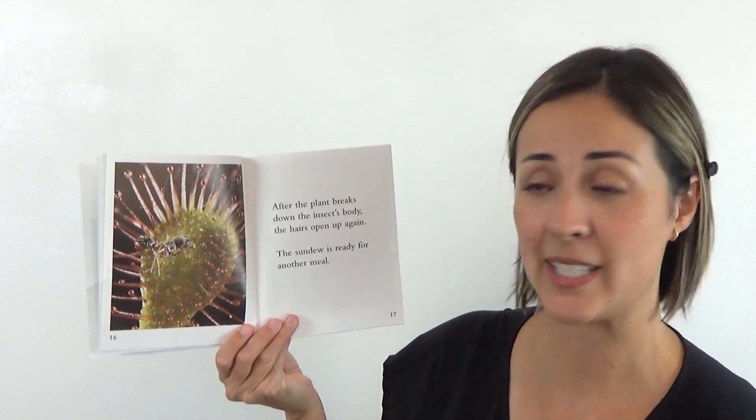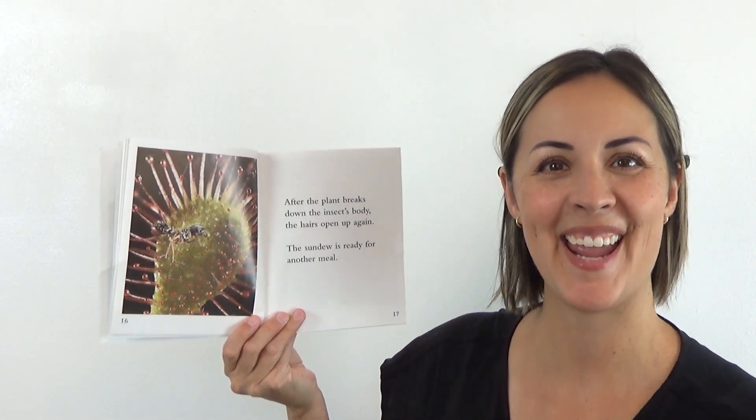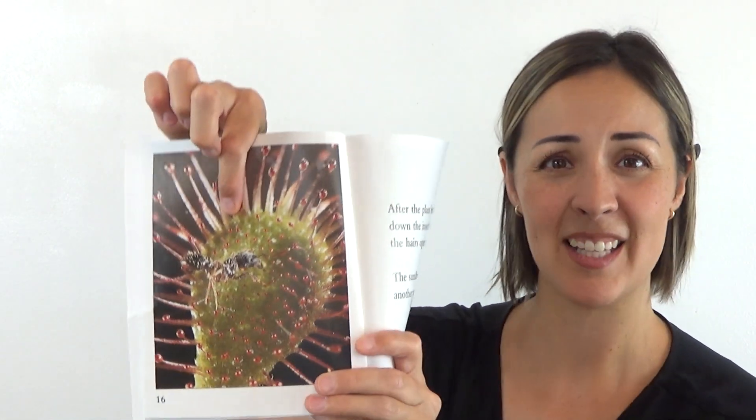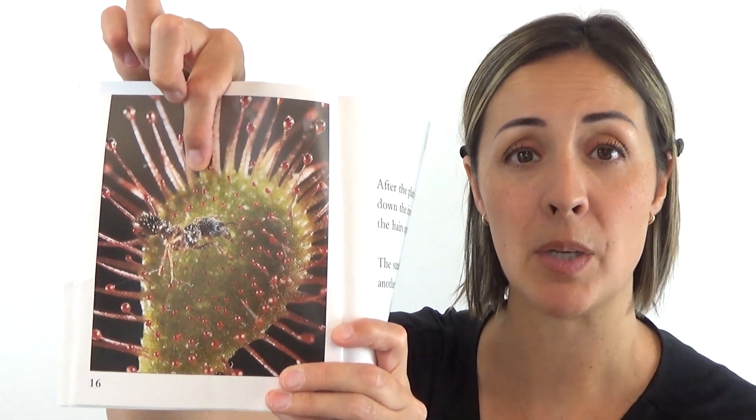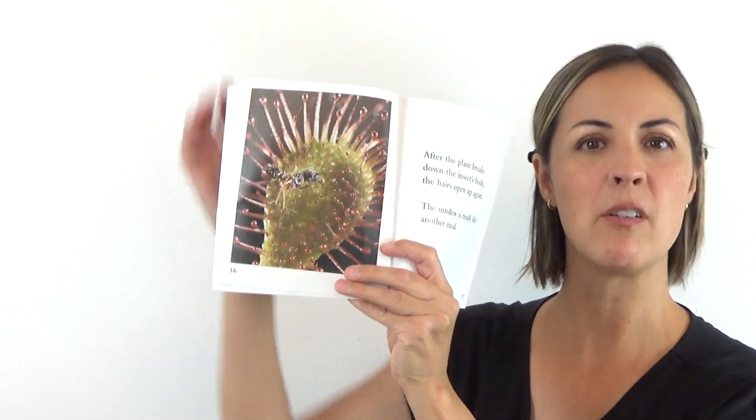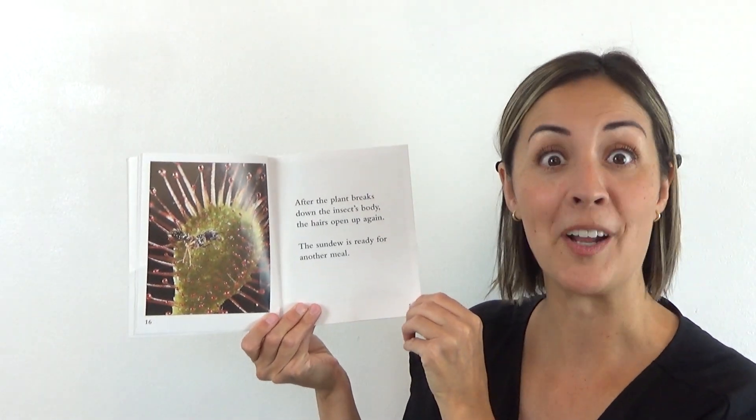After the plant breaks down the insect's body, the hairs open up again. Hey, just like on the Venus flytrap. And look, you can see that insect. It's kind of hard to tell what it is. Maybe it's a wasp, but it's hard to tell because all the nutrients, all the minerals have been taken out of it by the plant. The sundew is ready for another meal.